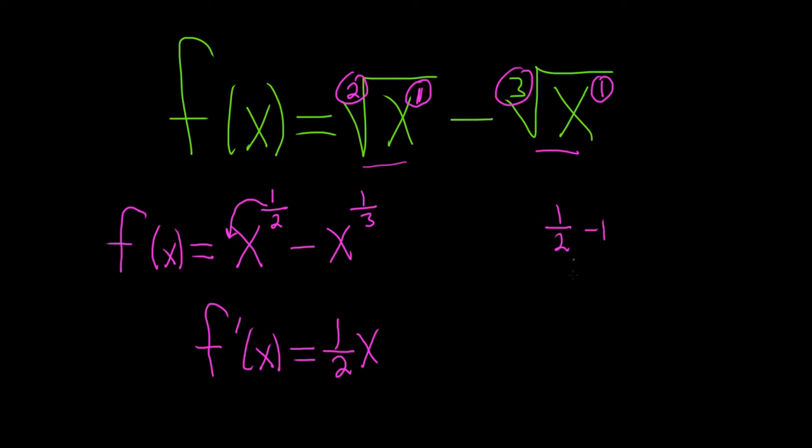You can think of 1 as a number over 2, so it's 1 half minus 2 halves. The reason you do that is so you can actually perform the subtraction. So now you just do 1 minus 2, and that gives you negative 1, so it's just negative 1 half.